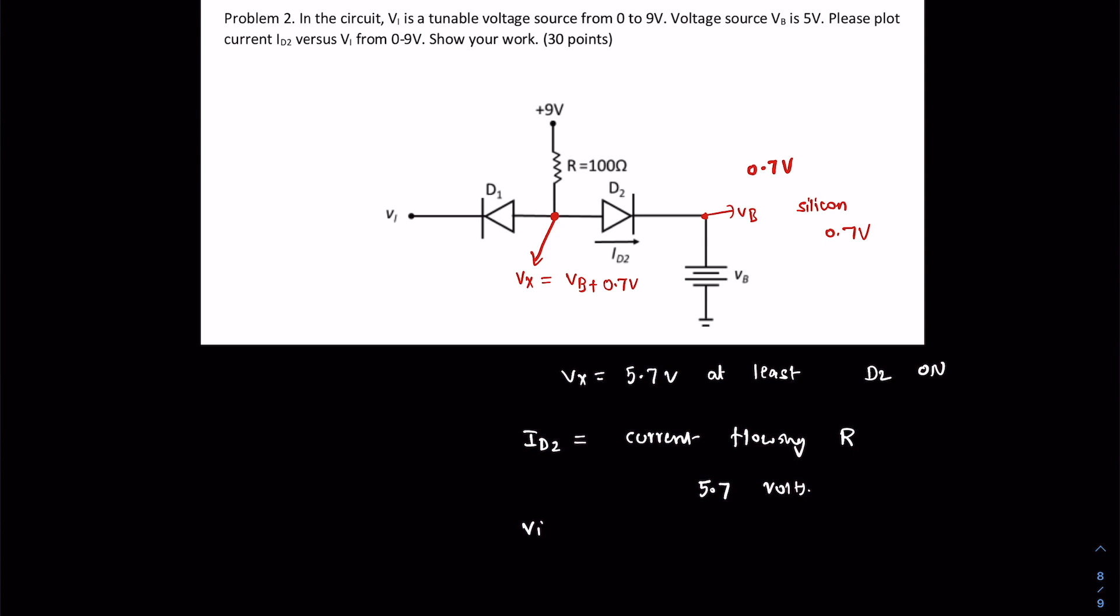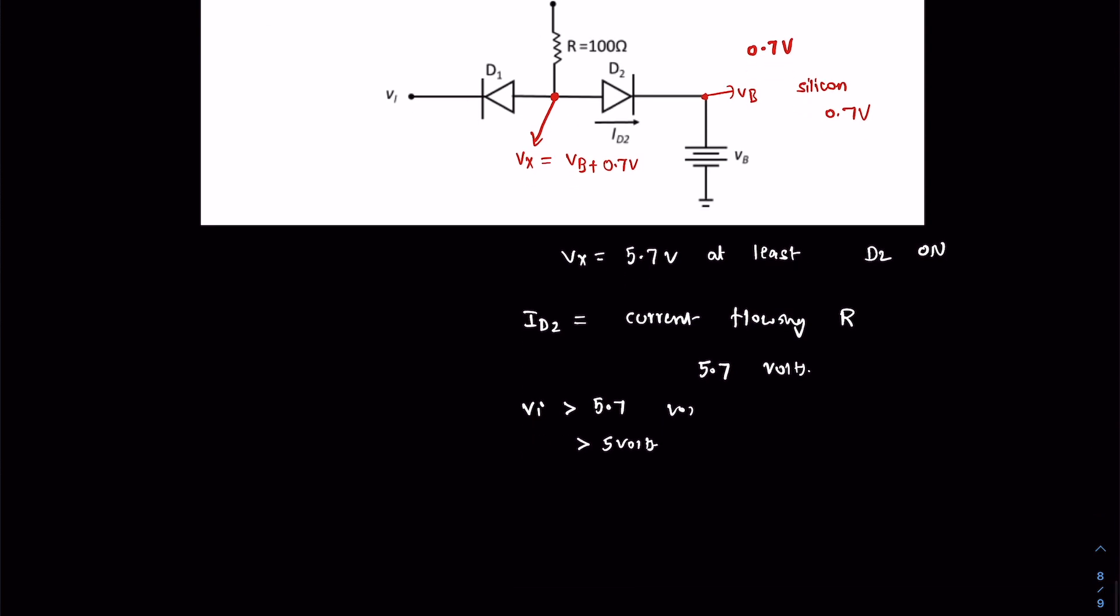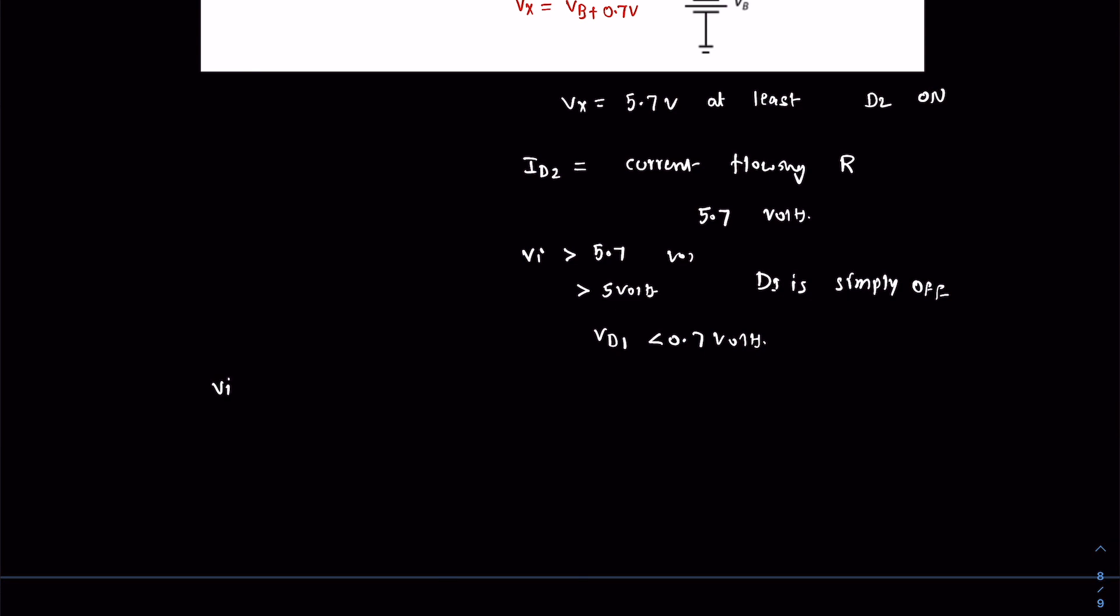If VI is greater than 5.7 volts, in fact if it is greater than 5 volts, then D1 is simply off because VD1, the voltage, is less than 0.7 volts. That is clear.